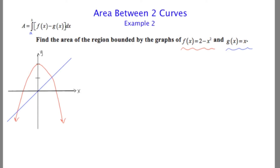I've taken the liberty to sketch these graphs ahead of time, so they're already up on the screen for us. The first one, f of x equals 2 minus x squared, can be thought of as y equals negative x squared plus 2. This is a parabola shifted two units up and turned upside down. The second curve is just y equals x, or the identity function.